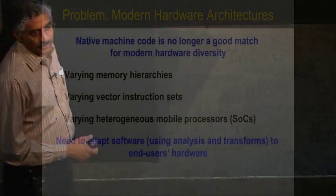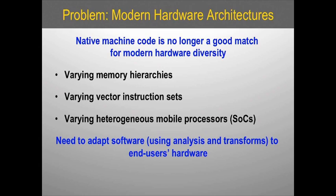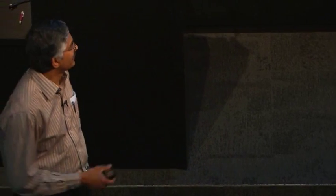What is wrong with this? There is nothing inherently wrong — it is just not as good as it could be. Modern hardware architectures are no longer a good match for this model because of increasing diversity. Memory hierarchies have been pretty diverse for the last 20 years or so. What is getting even worse now is vector instruction sets with different vector lengths, alignment requirements, and instruction features, making it very difficult to generate really good quality vector code for all the different variants of a particular processor family.